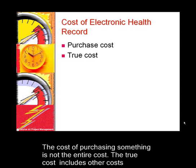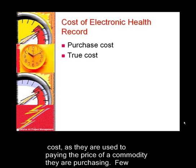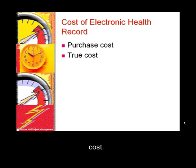The cost of purchasing something is not the entire cost. The true cost includes other costs and is often a lot more than the purchase cost. Most people are familiar with purchase costs, as they are used to paying the price of a commodity they are purchasing. Few people think about the true cost, and as a consequence, they have a distorted picture of the cost.